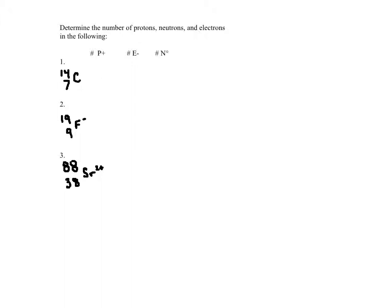Just as a review, remember you don't put a line here. This 14 represents your mass number, and remember your mass number equals your number of protons plus your number of neutrons. The other piece of information you get is that 7 is your atomic number.